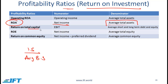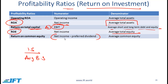Return on total capital is EBIT divided by average short and long-term debt. Note that in different textbooks you might see a slightly different definition of capital — some use long-term debt and equity, others use total assets. Return on equity is net income divided by average total equity. Return on common equity looks at the money available to common shareholders: net income minus preferred dividends divided by average common equity.